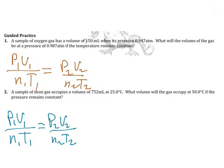A sample of gas is at 150 milliliters — so this is V1 — and at a pressure of 0.947, which is P1. The question asks: what will the volume of the gas be if the pressure becomes 0.987? So 0.987 is P2, and we're solving for V2.